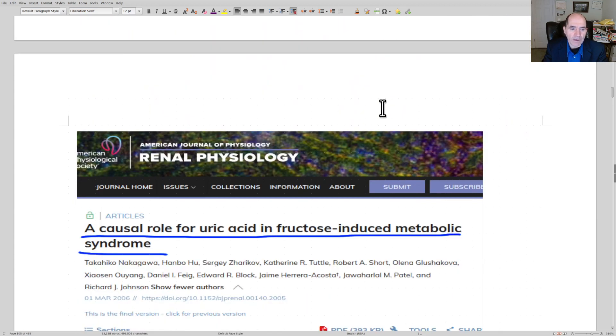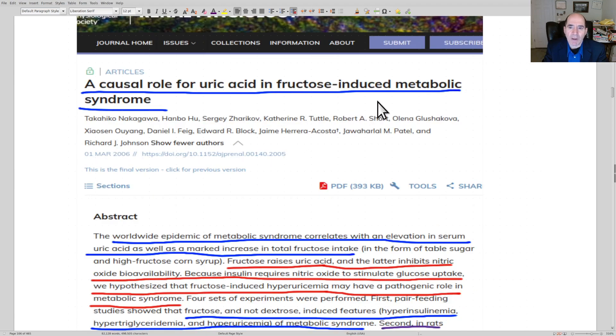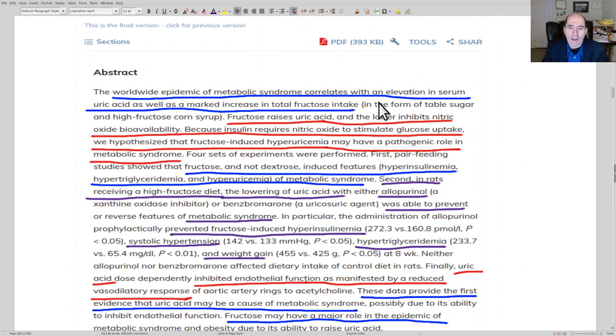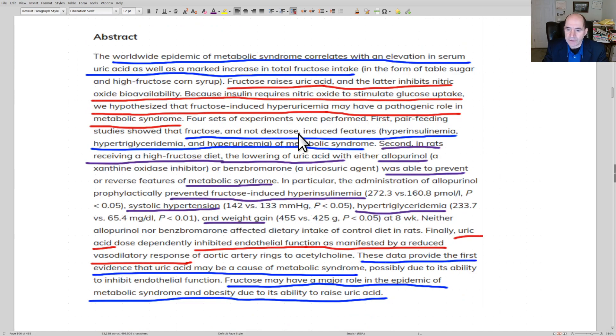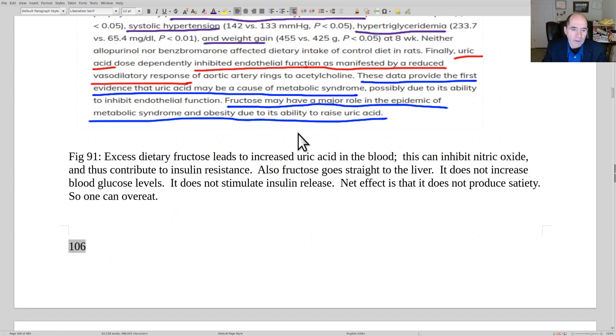Here's one paper about a causal role for uric acid in fructose-induced metabolic syndrome. This is just what we were talking about, that fructose will cause increased uric acid in the blood, and then the uric acid will inhibit nitric oxide being released into the blood, and then insulin can't do its job.